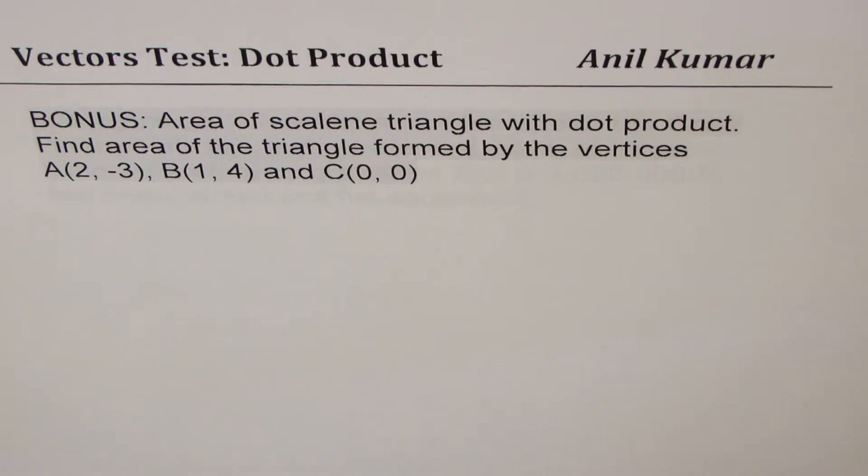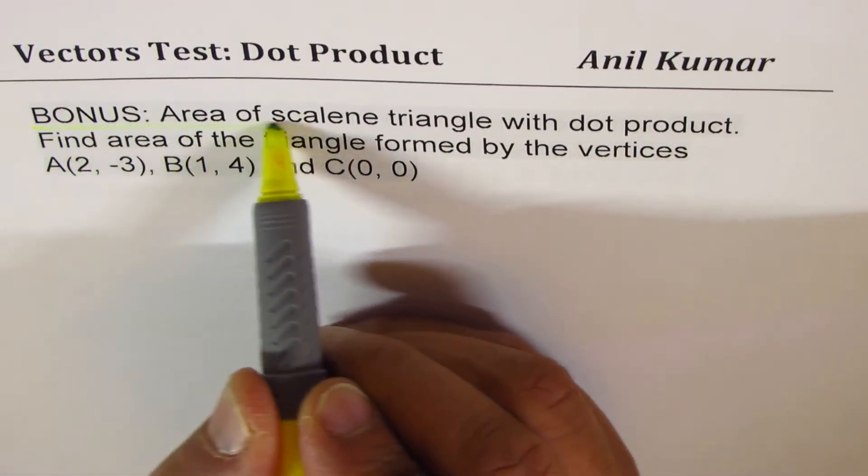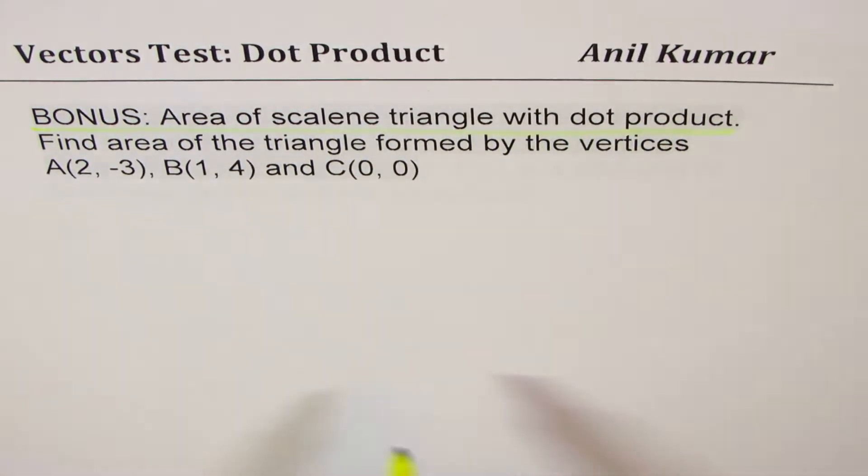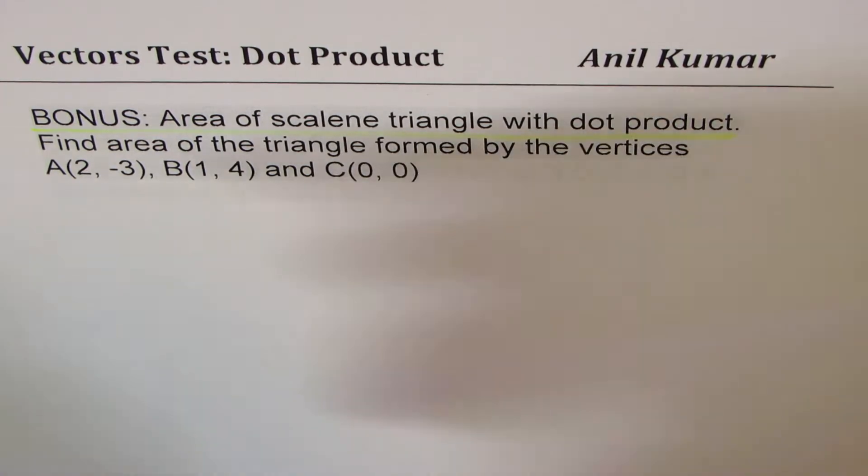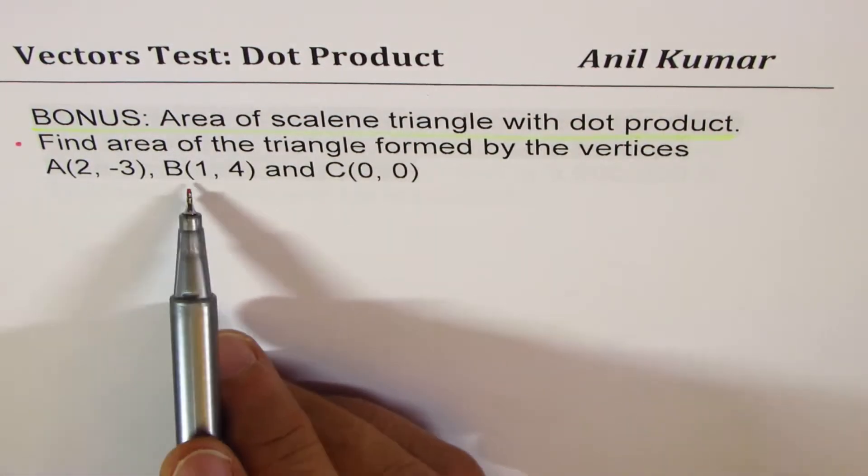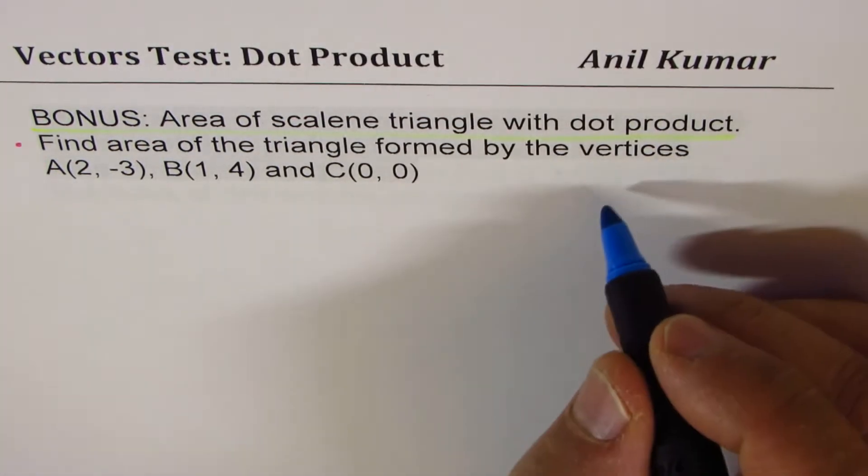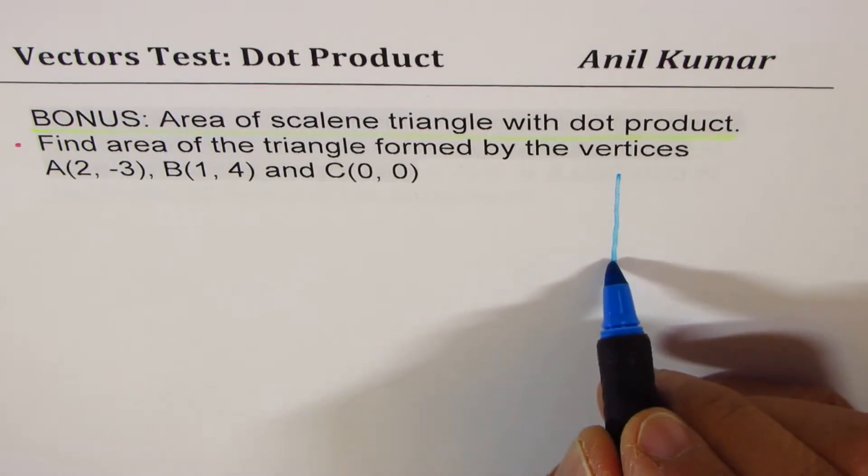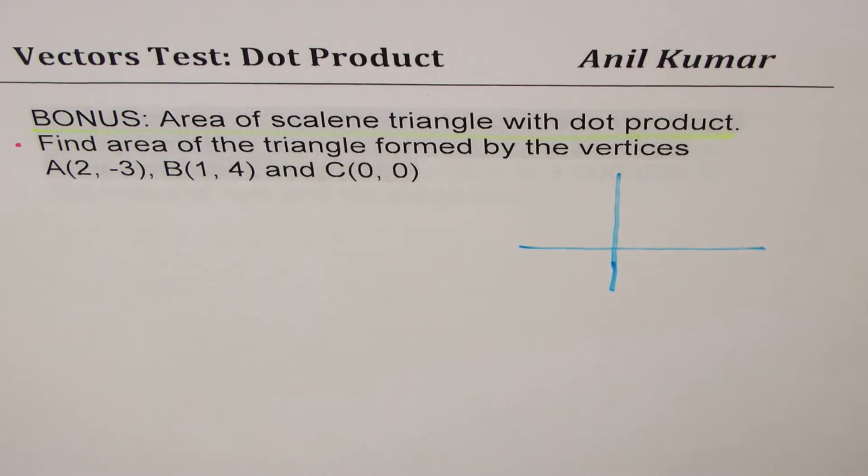Here we have a bonus question regarding area of a scalene triangle with dot product. We have to find the area of a triangle formed by the vertices A, B, and C. As you note, these are exactly the same vertices which we took in our example—I've done it on purpose.